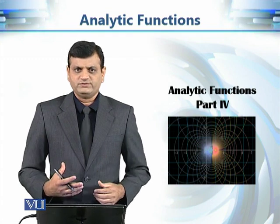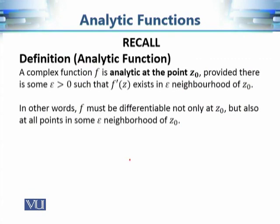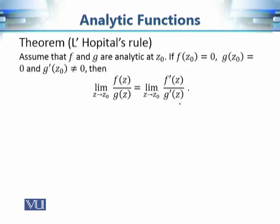We can extend L'Hôpital's rule using the help of analytic functions. As a recall: a function is analytic at a point z₀ if it is not only differentiable at z₀, but also differentiable at each and every point in some epsilon neighborhood of that point. We have been discussing many consequences of this condition. The L'Hôpital rule for complex valued functions is very similar to the real valued case. We are given two functions f and g that are analytic at z₀.